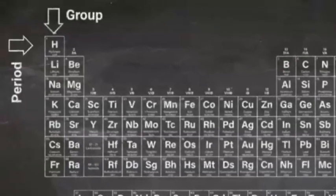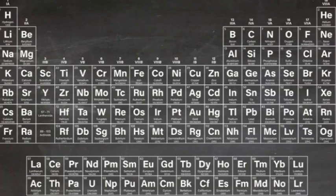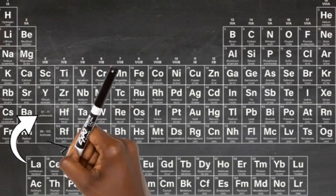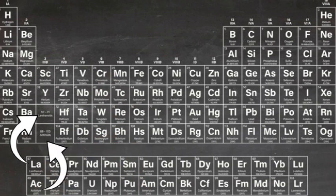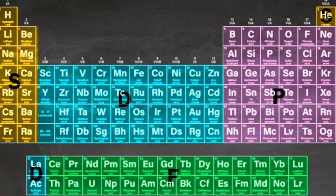The rows of the periodic table, known as periods, while also good to know, are less useful than the groups. However, it might be worth knowing that the lanthanides are in period 6 and the actinides are in period 7. As well as groups, elements are divided into blocks based on their electron configurations. The periodic table is divided into four blocks and these are easy to see from the table. The elements from scandium to copernicium are known as the D block elements. The only oddity is helium, which despite its position is an S block element.